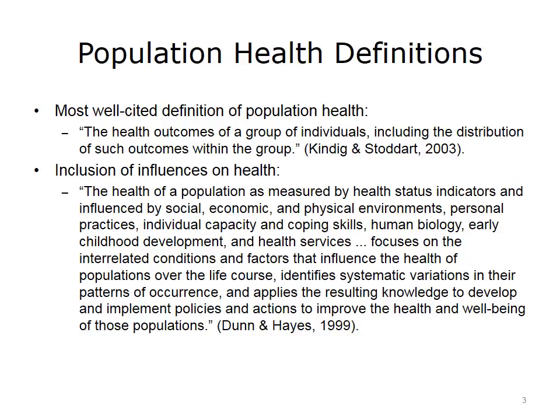In addition, there are definitions that are more specific. Dunn and Hayes' definition in their Canadian Journal of Population Health article, 'Toward a Lexicon of Population Health,' includes influences on health as part of the population: 'The health of a population, as measured by health status indicators, and influenced by social, economic, and physical environments, personal practices, individual capacity and coping skills, human biology, early childhood development, and health services, focuses on the interrelated conditions and factors that influence the health of populations over the life course, identifies systematic variations in their patterns of occurrence, and applies the resulting knowledge to develop and implement policies and actions to improve the health and well-being of those populations.'